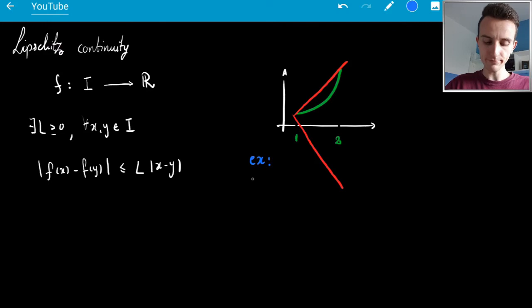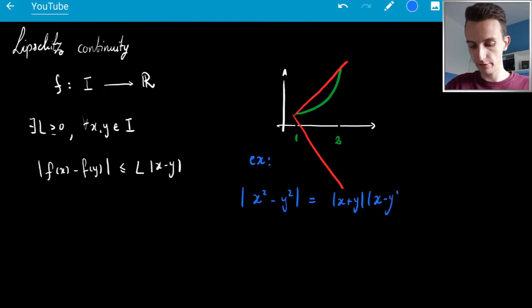so the example, we'd have, so we'd have this, this is x squared, so we'd have |x² - y²| right, that's equal to |x + y| times |x - y|, and now we note that x + y is always less than 4, right, because x and y range from 1 to 2,